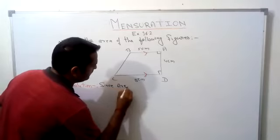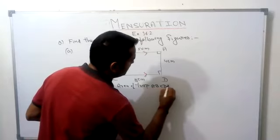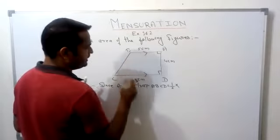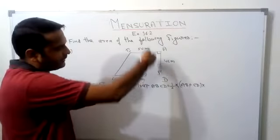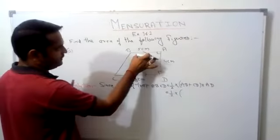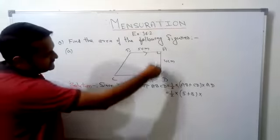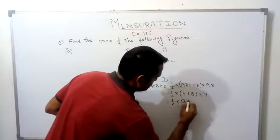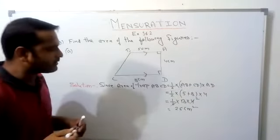Since area of trapezium ABCD equal to one by two sum of parallel sides AB plus CD into distance between them. One by two, AB is 8, CD is 4, distance is 5. So student, answer will be 36 centimeters squared.